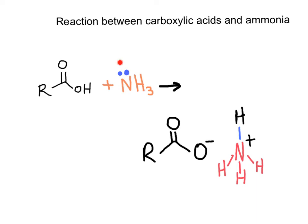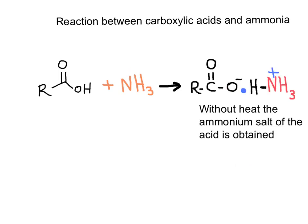This is an acid-base reaction involving nitrogen's abstraction of the proton from the carboxylic acid to produce the ammonium salt. If the reaction is carried out between 20 and 50 degrees, there is no amide formation — only an acid-base reaction to form an ammonium carboxylate salt. When the ammonium carboxylate is heated above 100 degrees, a molecule of water can be removed to produce an amide.